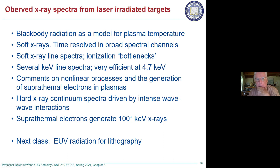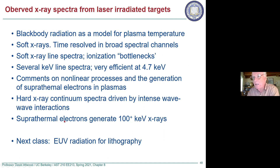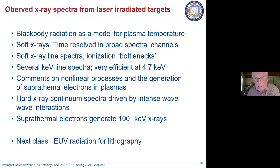We'll make some more comments about nonlinear processes and the generation of superthermal electrons, and about the hard x-ray continuum that may come because of that. If you have very high intensities like 10^15 or 10^16 W/cm², much higher than for high harmonic generation, and put that onto a target, you can generate enormously high energy electrons — fractions of an MeV.